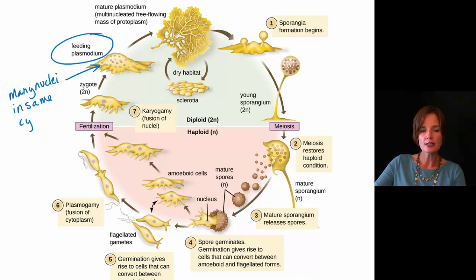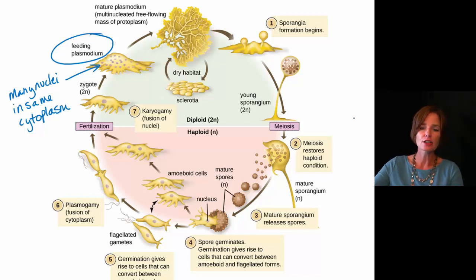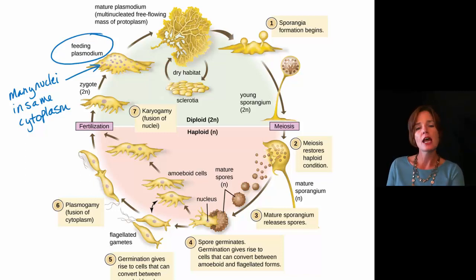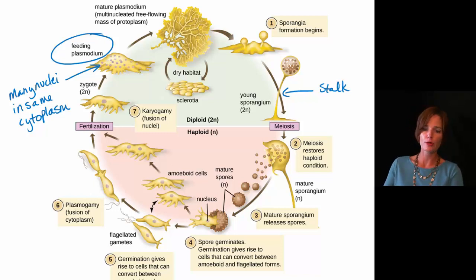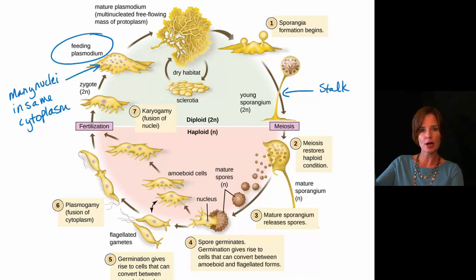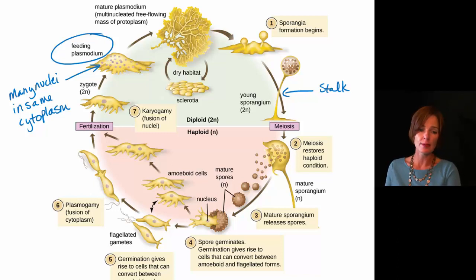They're not divided from each other by a plasma membrane. They actually work together so they can spread out and cover a large area for feeding and absorbing nutrients. Then later on they work together to actually build a stalk, which helps with their reproduction process. They do produce spores, which they want to raise up on a stalk and then release into the environment.